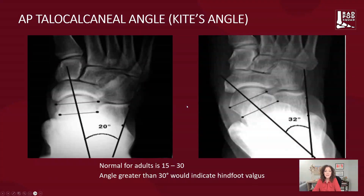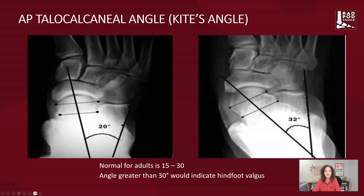Looking at Kite's angle — the AP talar calcaneal angle — this can help us appreciate whether we are at the state of pes planus and uncovering of the talar head. We bisect the talus and then go along the lateral calcaneal sidewall. The angle between these two regions is referred to as the talocalcaneal angle on a frontal projection, and what we're looking for is a widening of that talocalcaneal angle in pes planus as the talus begins to move medially with respect to the navicular.